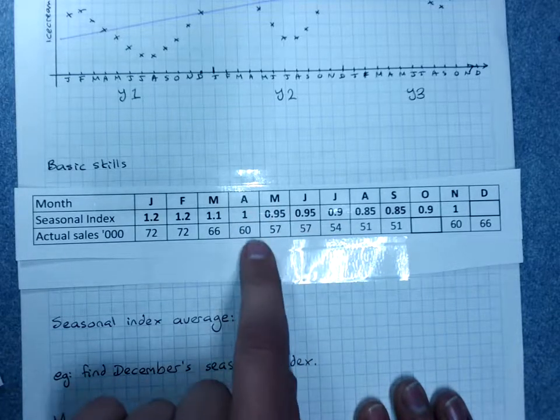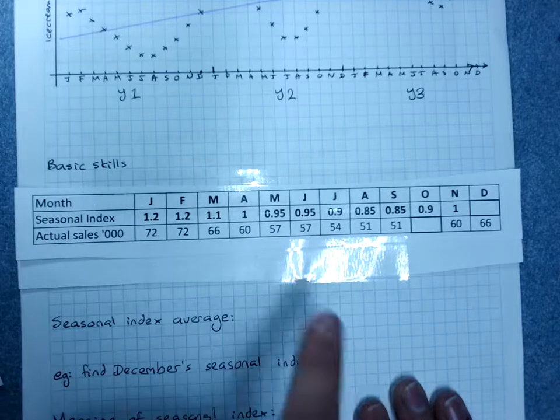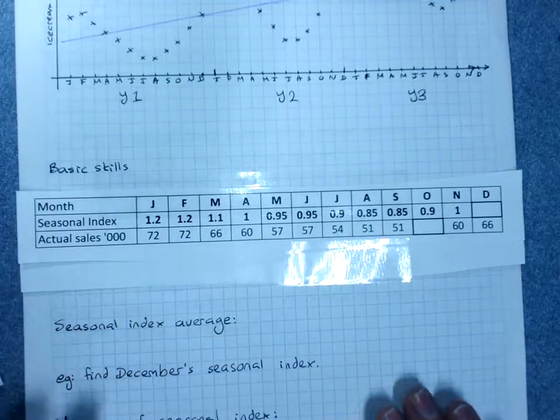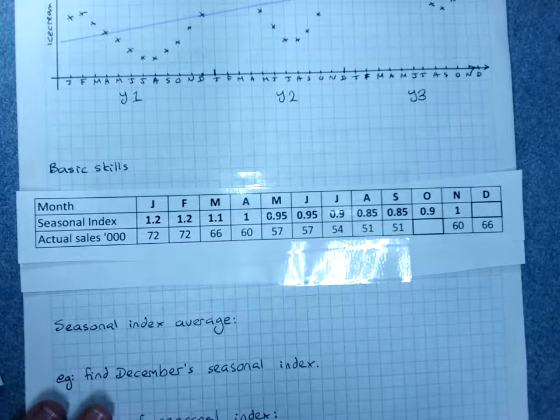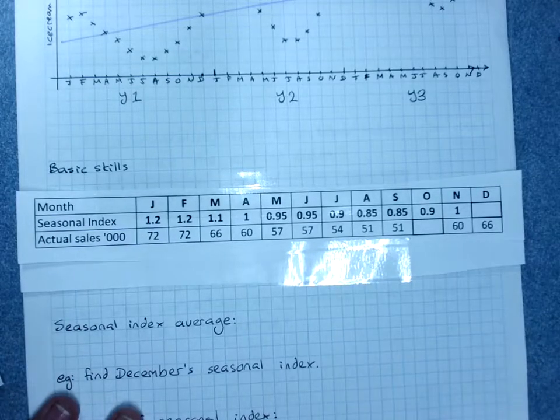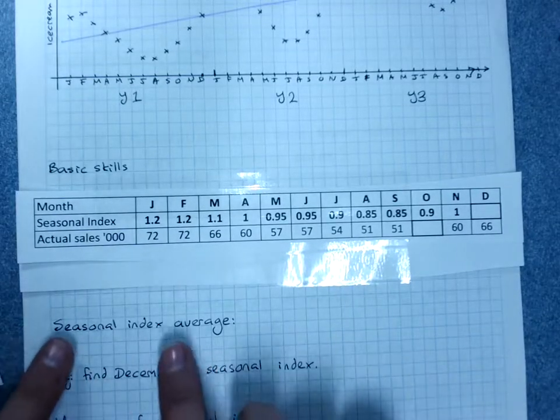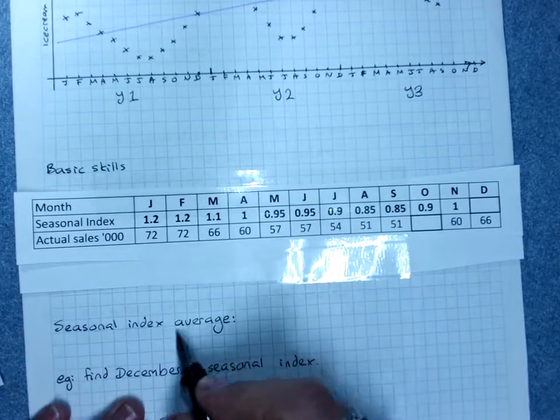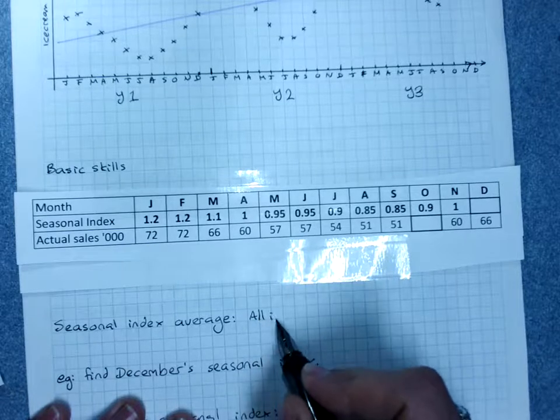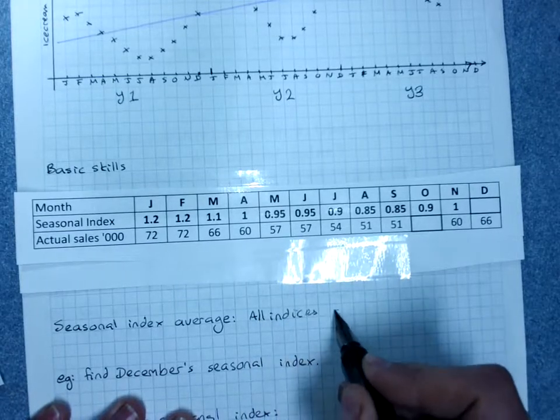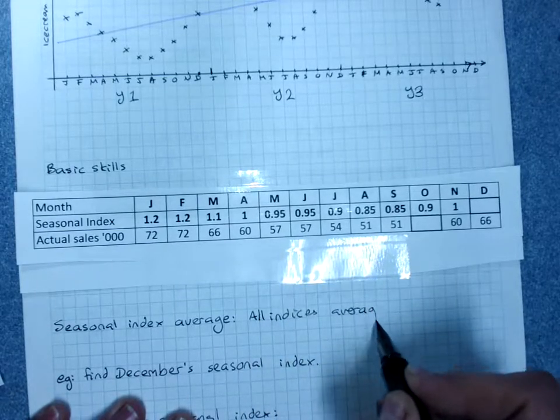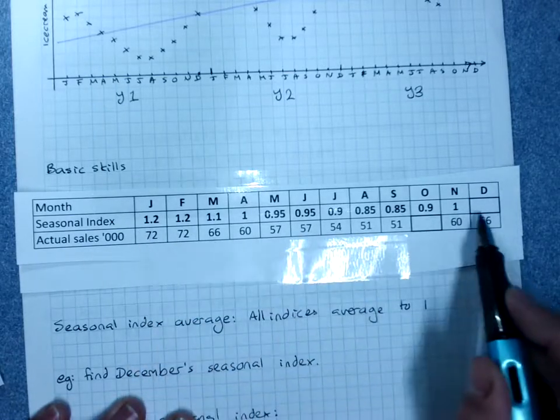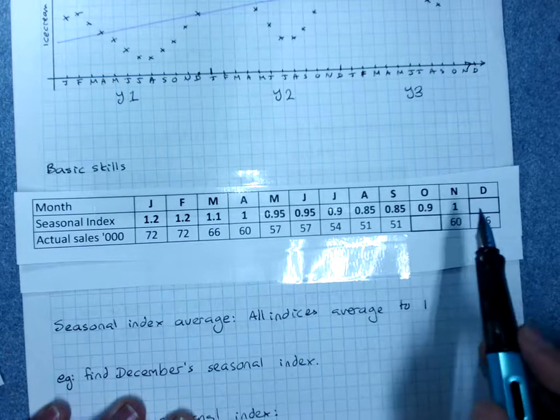So you can see that the monthly average here was sixty. It's below the monthly average; this one's above the monthly average. The seasonal index average - all the indices average to one.